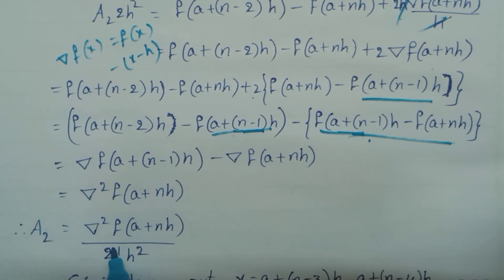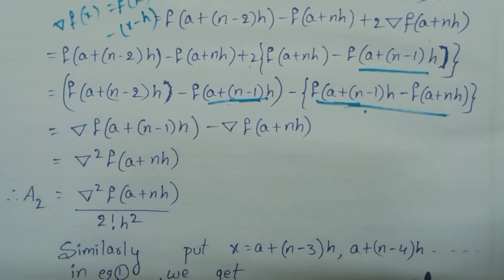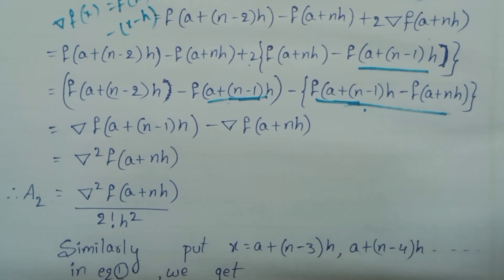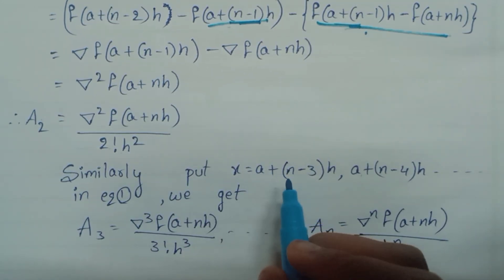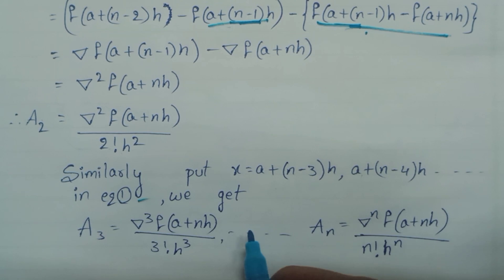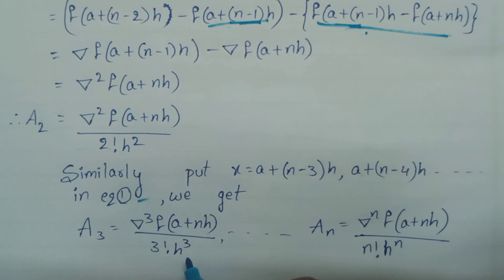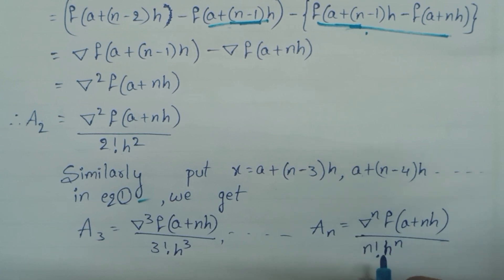Similarly, by substituting x = a + (n−3)h and so on, continuing for n values substituted into equation 1, the general pattern gives: an = nabla^n f(a+nh) / (n! · h^n). We now have all constants a0, a1, ..., an determined.